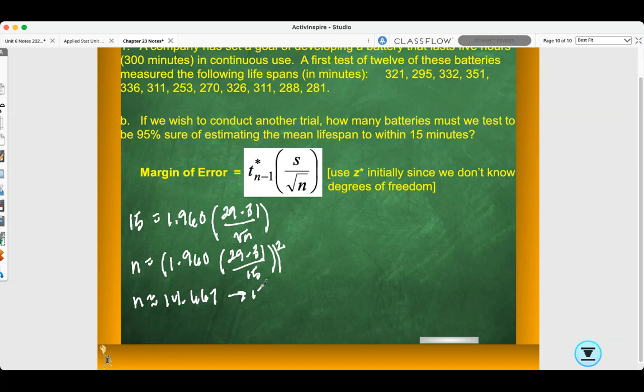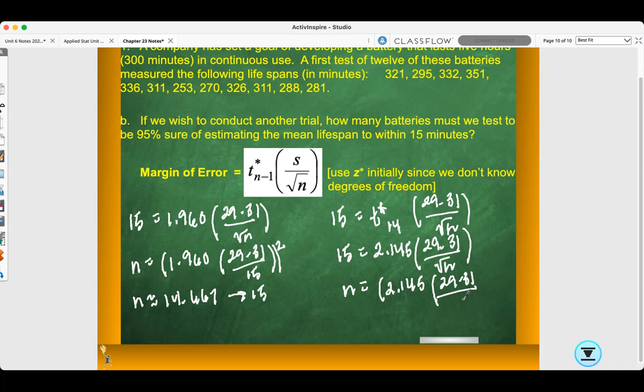Since we're rounding up to 15, that means our degrees of freedom is 14. If your n was greater than or equal to 40, you wouldn't have to plug it back into the T-star formula. However, our n is less than 40, so we need to plug it back into the margin of error formula for T-star. So 15 equals T-star with degrees of freedom 14, times 29.31 over the square root of 15. With degrees of freedom 14, T-star would be 2.145. Solving for n: n equals 2.145 times 29.31 over 15 all squared. I would get n is about 17.567, but we always need to round up. So our sample size would have to be n equals 18.